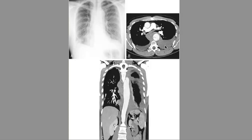In DeBakey's classification, Type 1 involves the entire aorta — both ascending and descending. Type 2, often associated with Marfan syndrome, involves only the ascending aorta. Type 3 involves the descending aorta and is related to hypertension or trauma most of the time. In this coronal CT image, the intimal flap extends all the way down, covering the entire descending aorta. Assuming it started distal to the left subclavian artery, this would be a Type B dissection in Stanford classification.